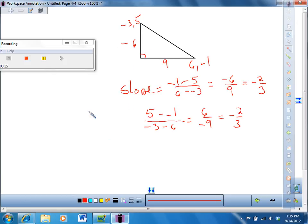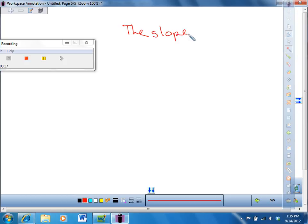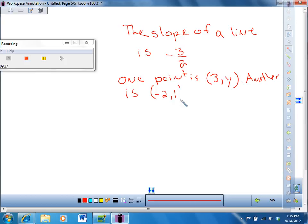Okay. So delta Y is negative 6, delta X is positive 9. Then you'll see some other types of problems where you have to use algebra a little bit. So the slope of a line is negative 3 over 2. And they'll say one point is 3 comma Y. Another is negative 2, 1. Find Y.